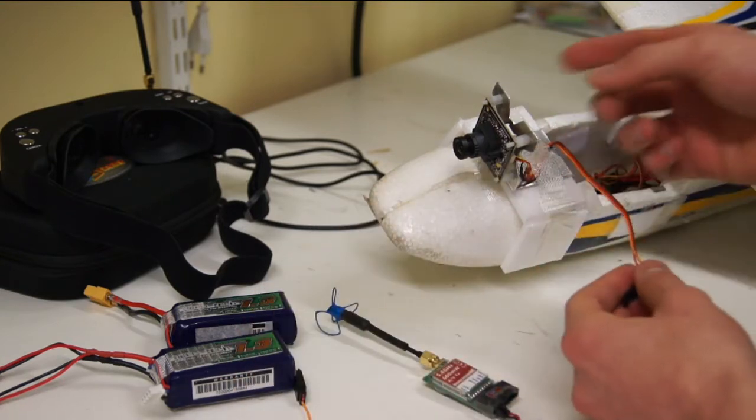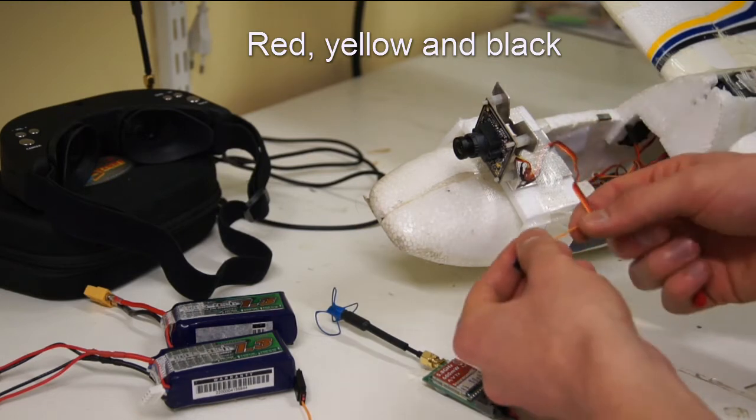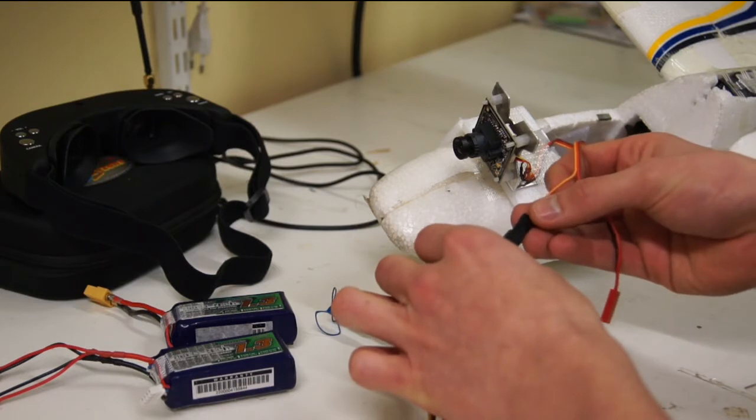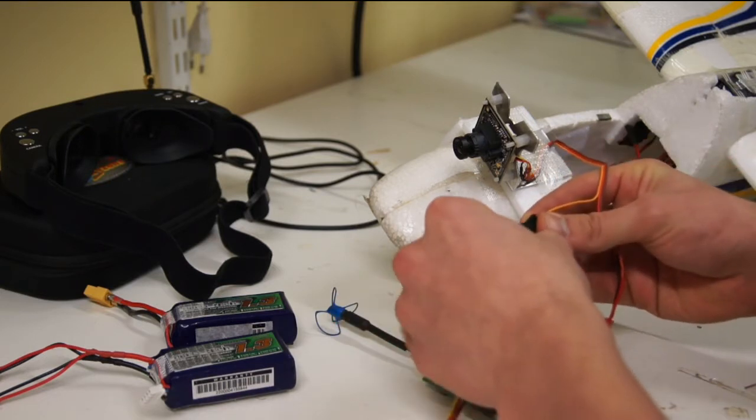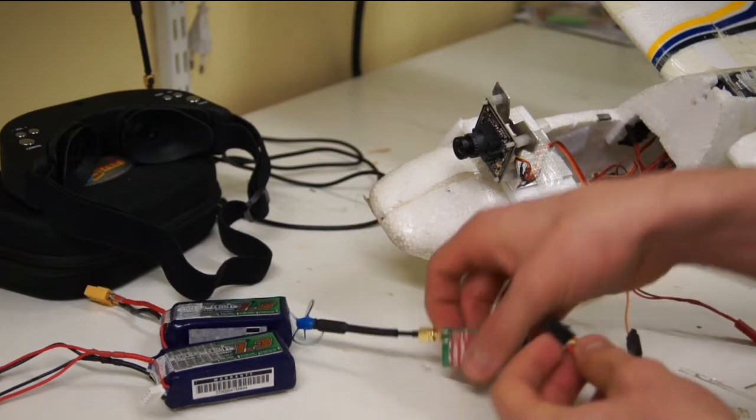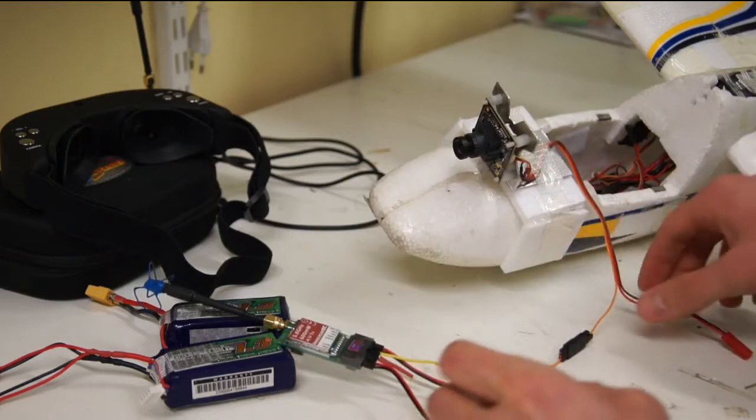And the camera itself has 3 wires - red, yellow, and red. So all you have to do is take the yellow end, connect it to a servo connector, and connect them both together. So this one goes to the video transmitter, just like this. And that's the video.